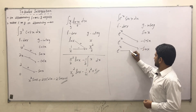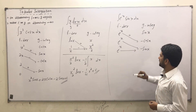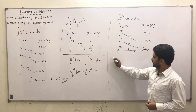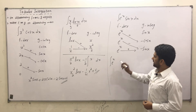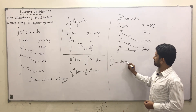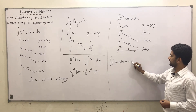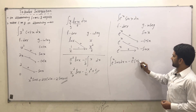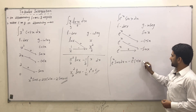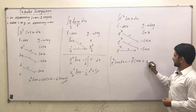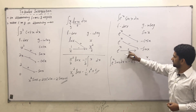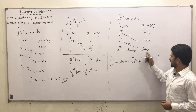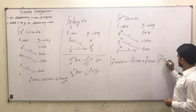We match: first with second, second with third, and third with third. The signs alternate: positive, negative, then positive. So ∫eˣ sin(x) dx equals: multiplying gives eˣ · cos(x) — wait, this should be cos(x) — then minus times minus gives plus eˣ sin(x), then plus times minus gives negative, and we write the integration sign here for eˣ sin(x) dx.